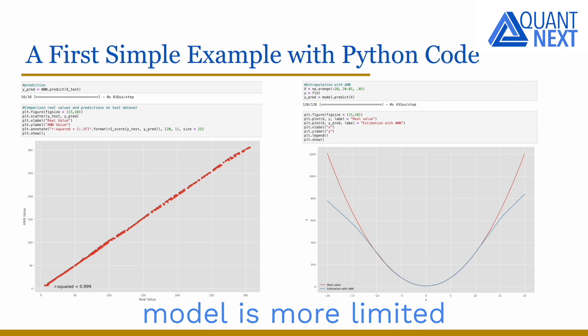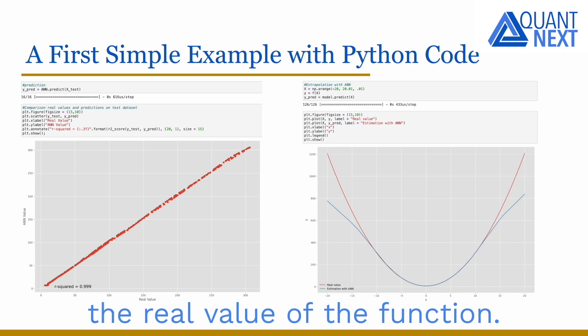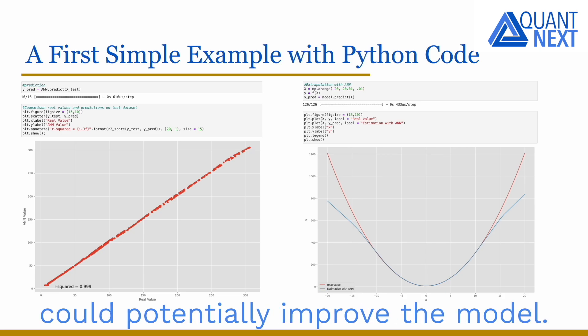However, the efficiency of the model is more limited when we want to extrapolate the curve. As highlighted on the chart on the right, when using input data out of the initial range between minus 10 and plus 10, the model tends to underestimate the real value of the function. Other neural networks or different parameters could potentially improve the model.